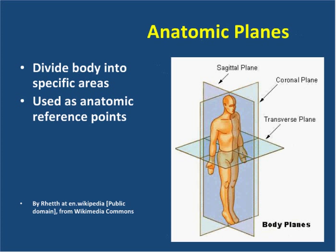The body is divided into three major planes. The coronal plane, coronal coming from the term for heart, divides the body from front to back. The sagittal plane divides the body side to side. And the transverse, or cross-sectional plane, cuts through the body in slices from top to bottom. These are used as anatomic reference points.